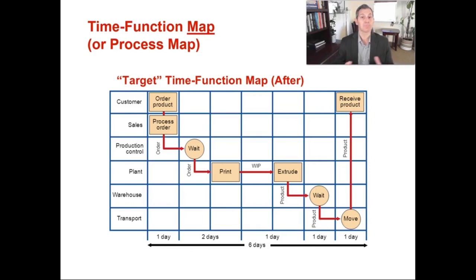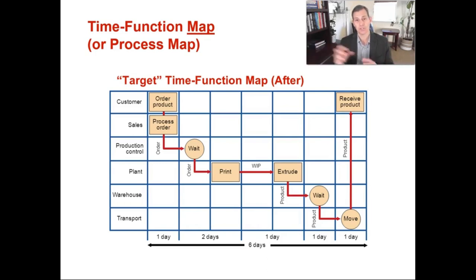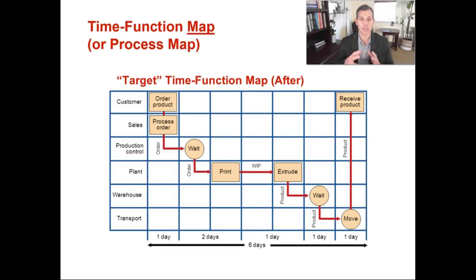It's not uncommon to dramatically reduce the lead time to your customers by looking at your own internal processes — examining all the steps from the time you receive an order to the time you ship it. There are non-value-added activities, wait times, setup times, and individual processes that can be improved. A time function map or process map is one of those tools to help you improve your process design.